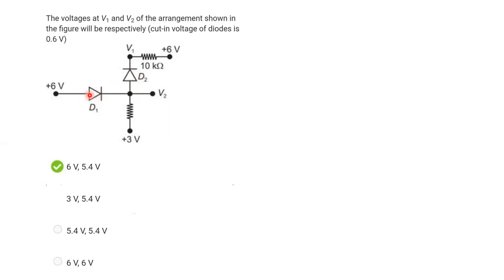In the D1 diode, the P-type is at 6V and N-type is at 3V. Since P-type is at higher potential, D1 diode is forward biased. In the D2 diode, the N-type is at 6V (higher potential) and the P-type is at 3V (lower potential).